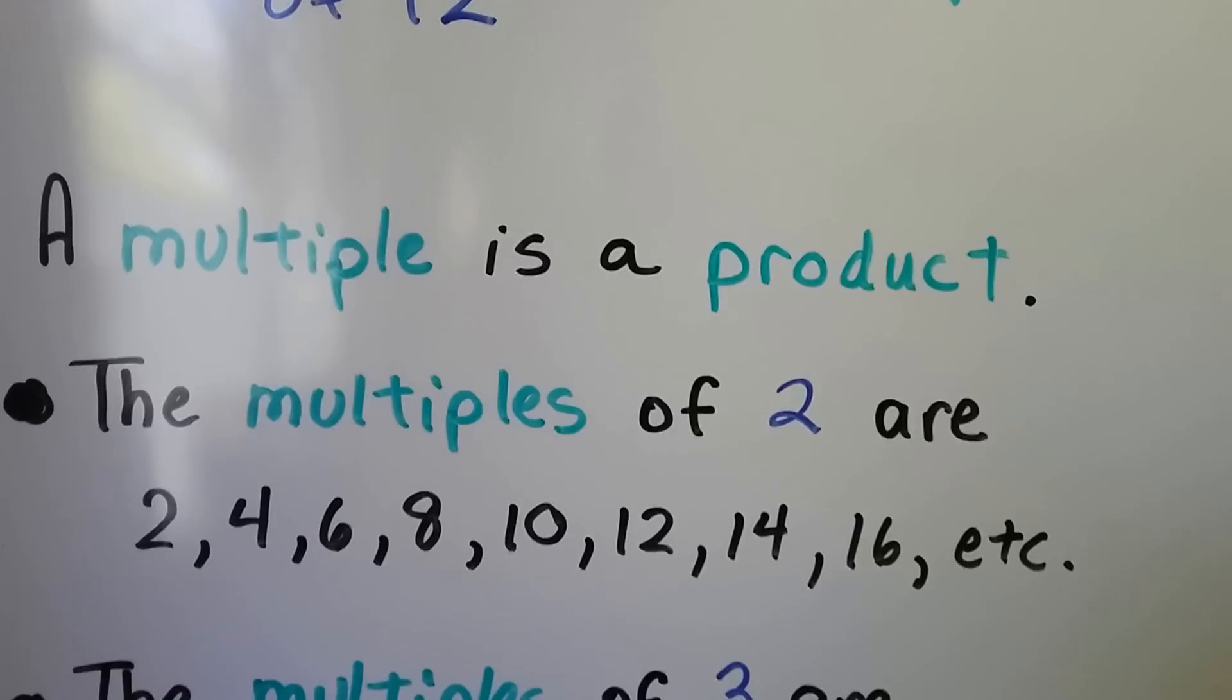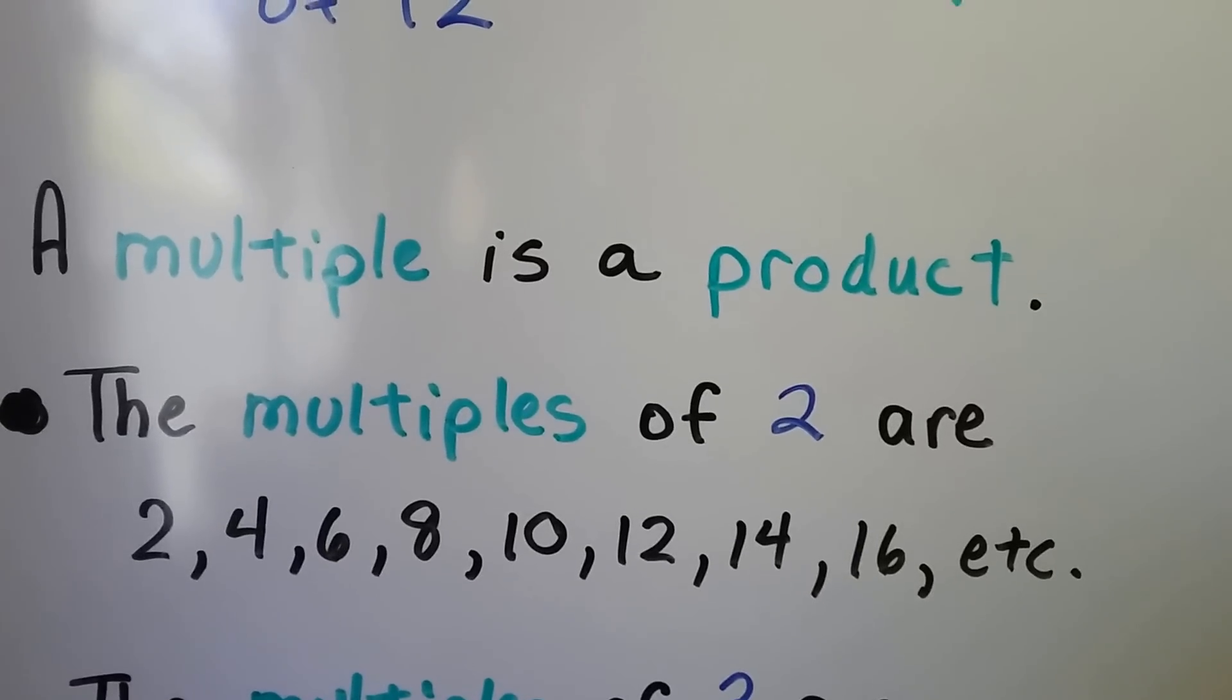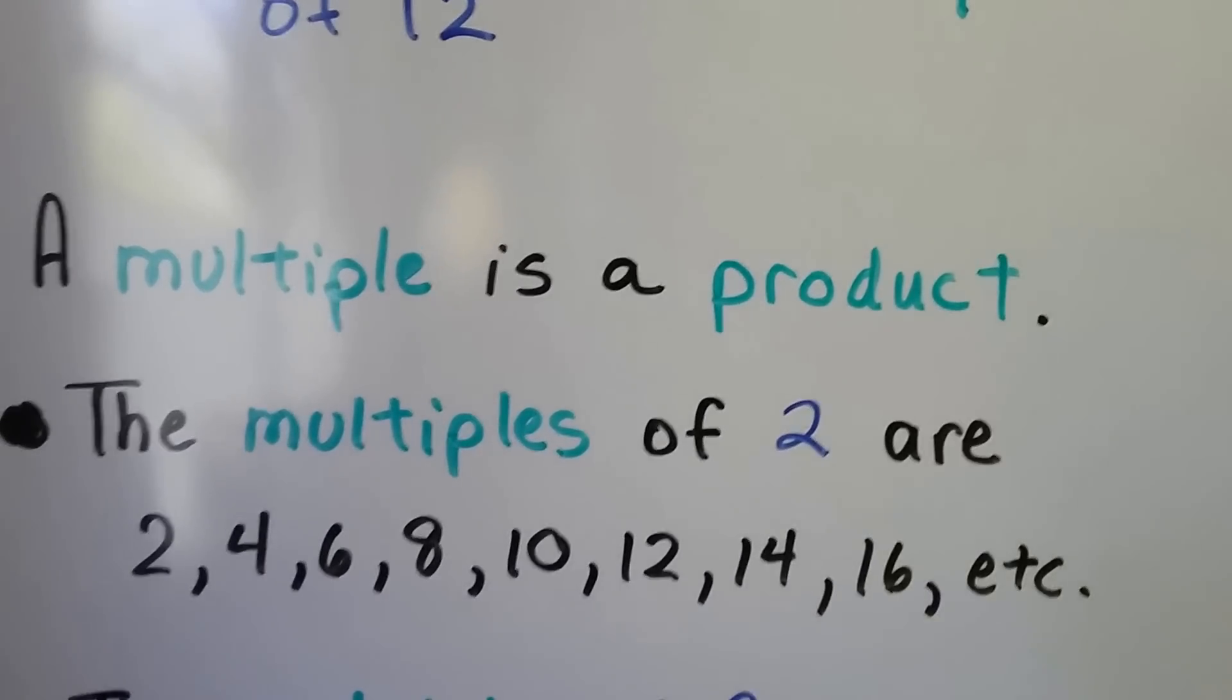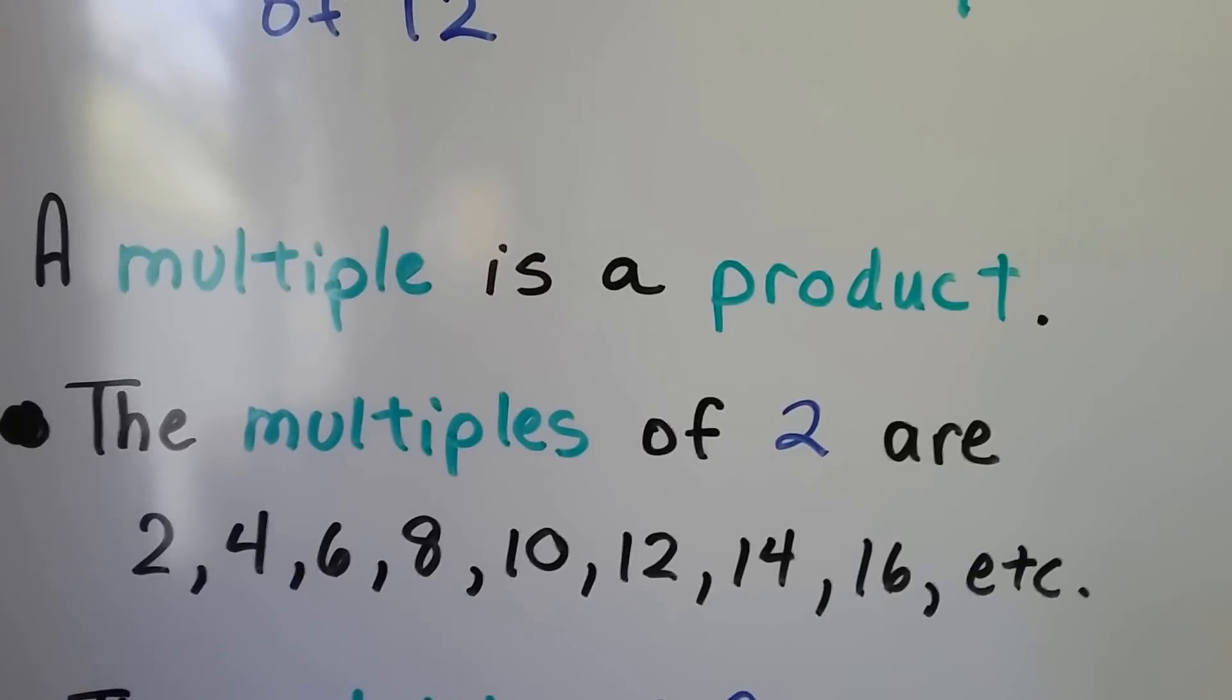And the multiples of 2 are 2, 4, 6, 8, 10, 12, and we could keep going. We could keep skip counting by 2. They would all be multiples of 2.